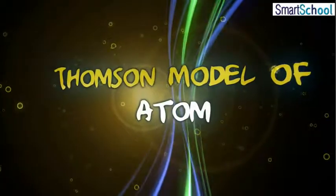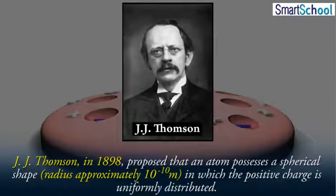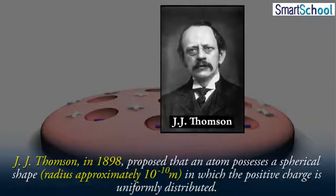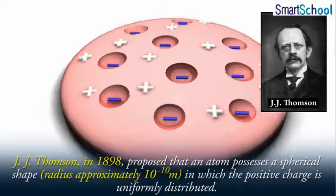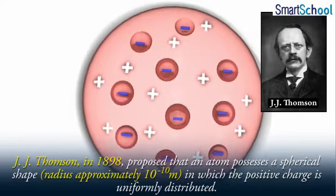Thomson's Model of Atom. J.J. Thomson in 1898 proposed that an atom possesses a spherical shape with radius approximately 10 raised to the power minus 10 meters